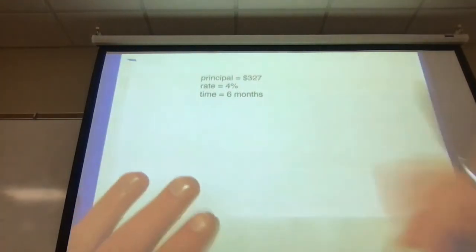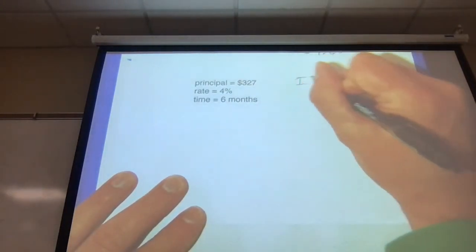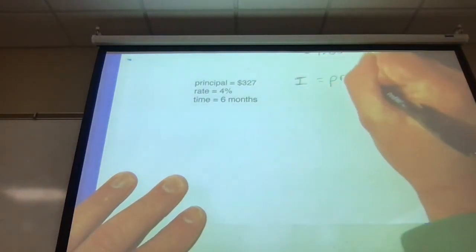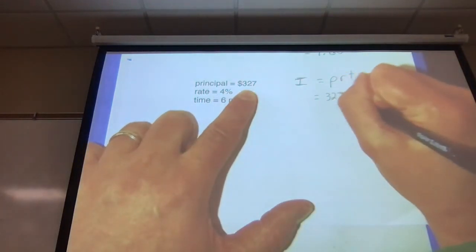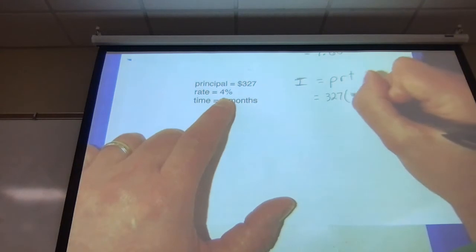All right, I'll show you another one real quick. Same type of deal. If they want simple interest, you're going to use I equals PRT. P stands for principal. This time the principal is $327. The rate is 4%. 4% I'm going to write as a decimal, that's .04.